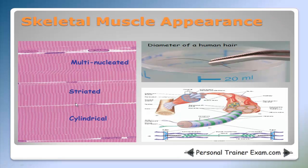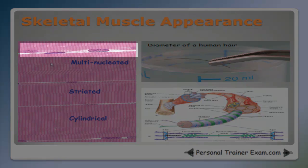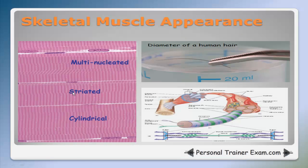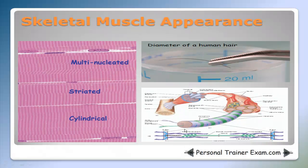Here is a picture of skeletal muscle. As you can see it's multinucleated — there are many nuclei located on the outside or periphery of the cell. It has a striated appearance with alternating dark and light patterns. It's cylindrical in shape, and a skeletal muscle fiber is about the diameter of a human hair.